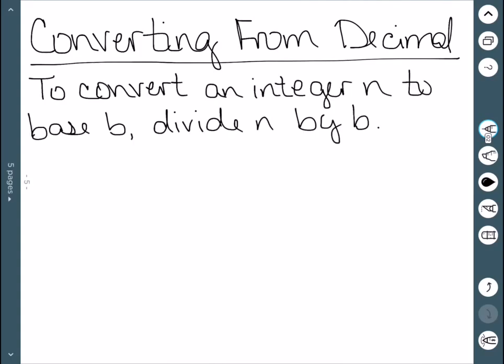Our first step is if we want to convert an integer n to base b, we're going to divide n by b. So divide the number by the base. Our division algorithm then says we have n is equal to b times q0 plus r0. So we have our quotient and our remainder.